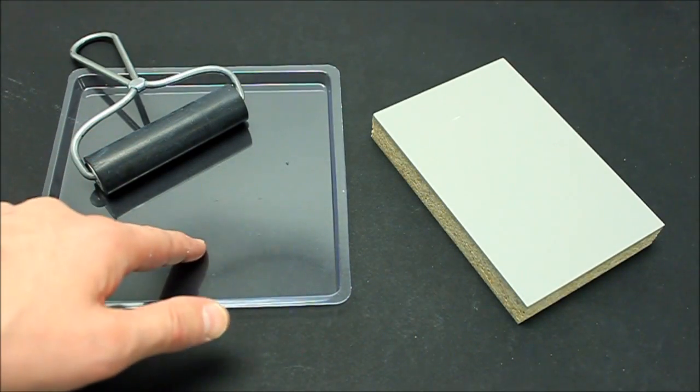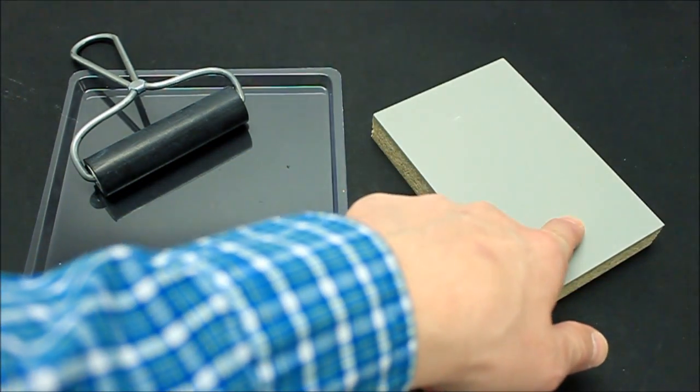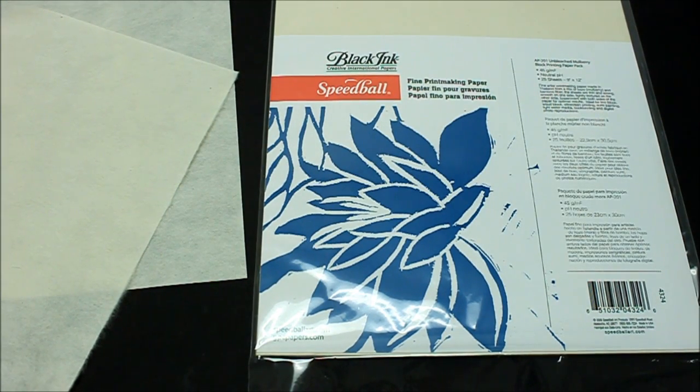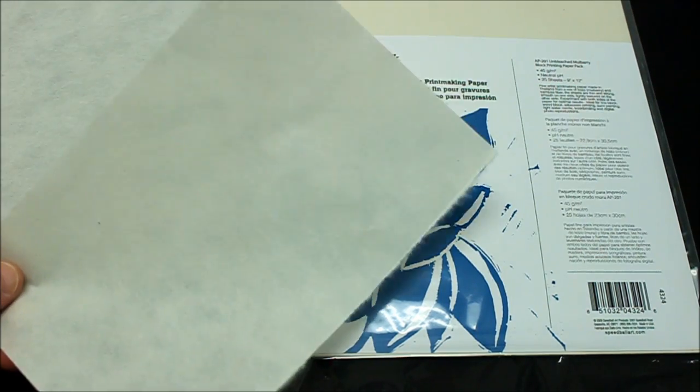You will need a brayer, a mixing tray, and a 4 by 6 linoleum block for each color. I cut a 9 by 12 sheet of printmaking paper in half, making it 6 by 9.